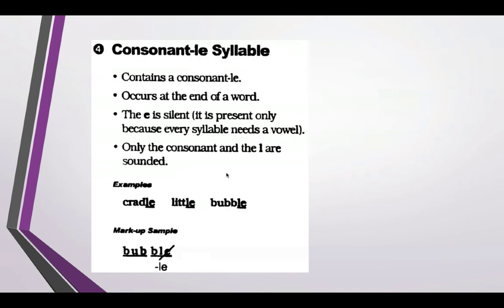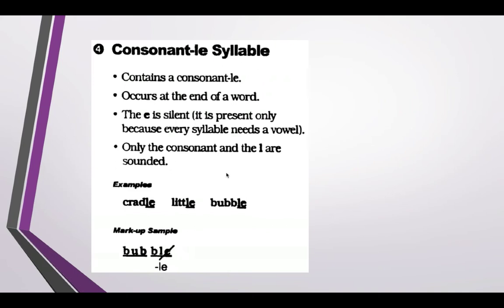For consonant LE, it's going to be at the end of the word. The E is silent, but it's present because every syllable needs a vowel. The consonant and the L are the ones that are voiced, not the E. So in 'cradle,' 'little,' 'bubble,' you don't hear the E. When marking up this syllable type, you cross out the E and indicate it as dash-LE.